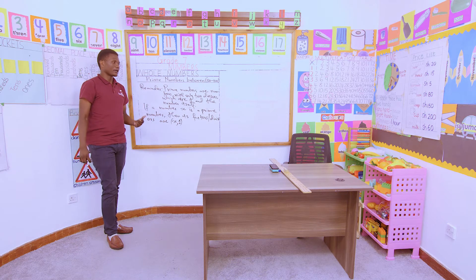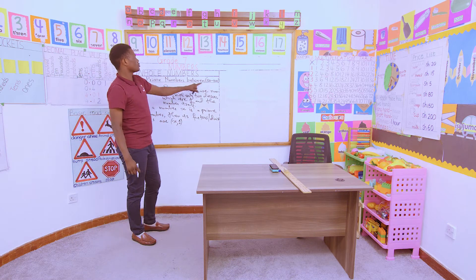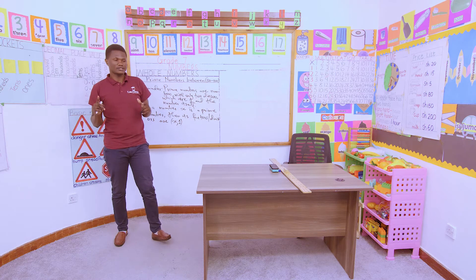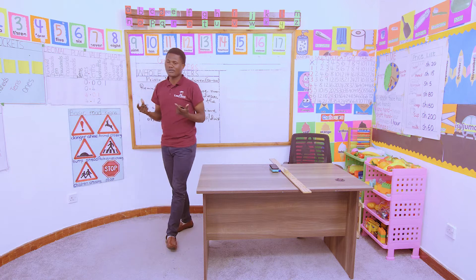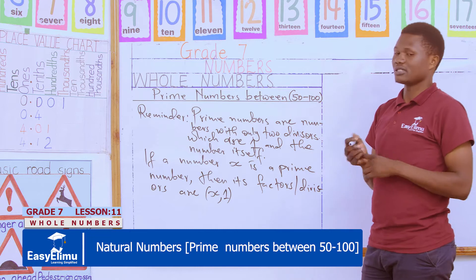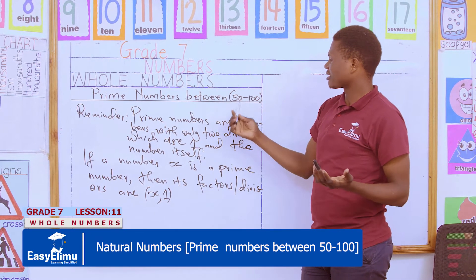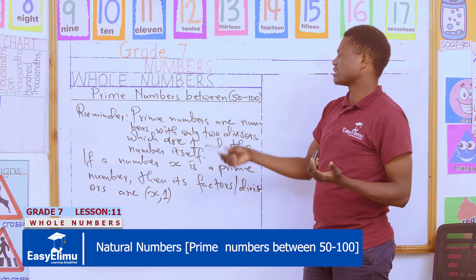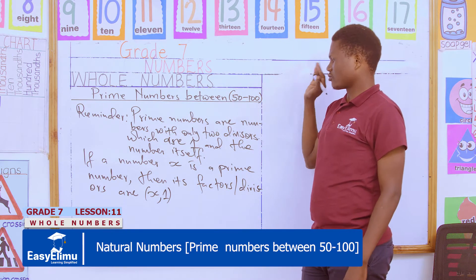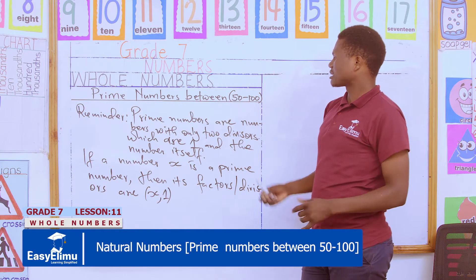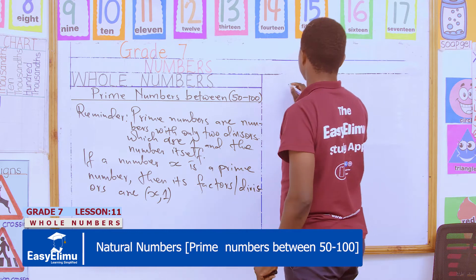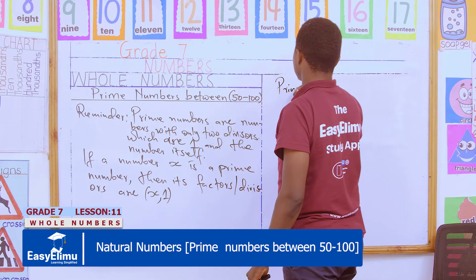This is the meaning of a prime number. Now when it comes to identifying prime numbers between the interval 50 to 100, most of us tend to confuse odd numbers and prime numbers. Most students are good at identifying primes between 1 to 20 or 1 to 50, but from 50 to 100 onwards most of us mix up odd and prime numbers. So I want us to identify the prime numbers between that interval.